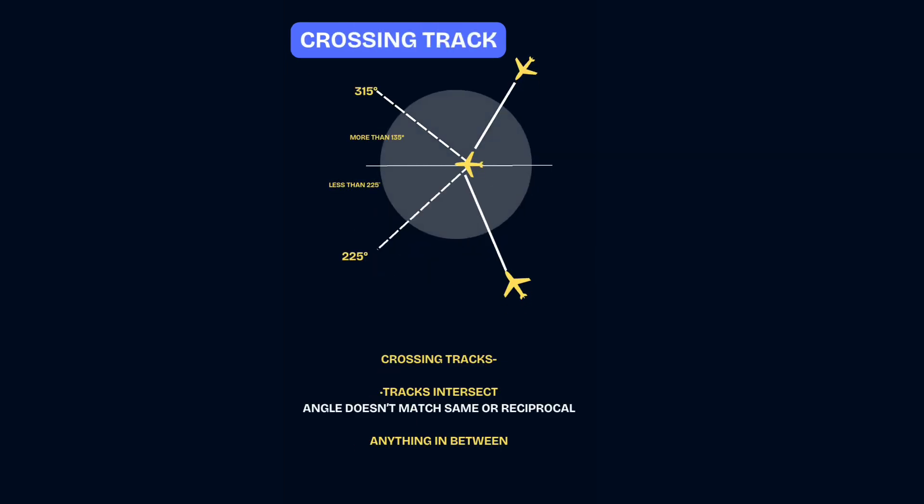Crossing tracks cover any angle that's not same or reciprocal. It simply means the tracks intersect.